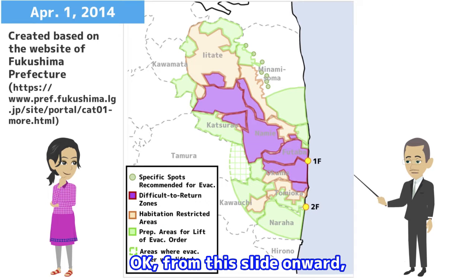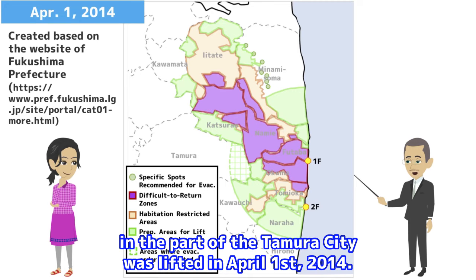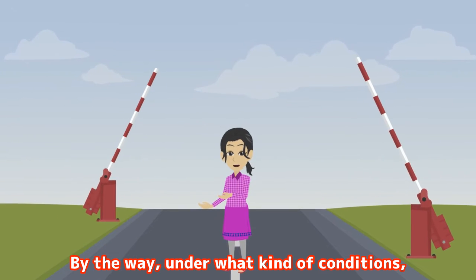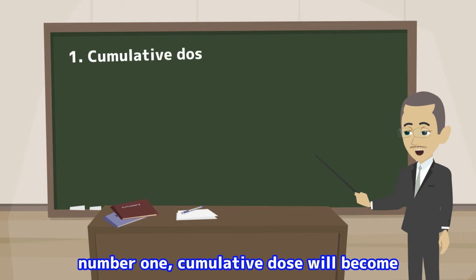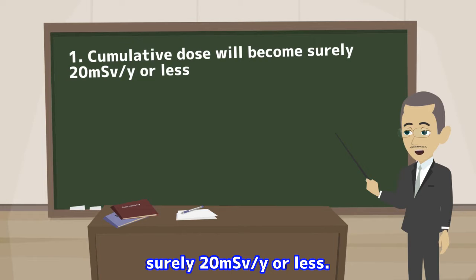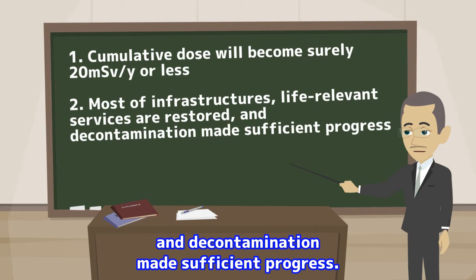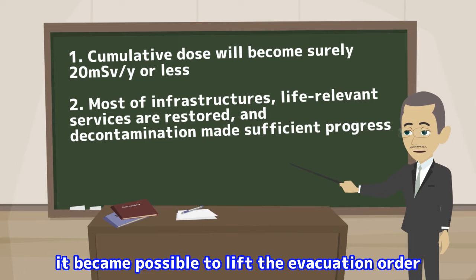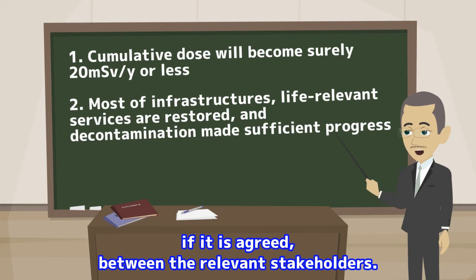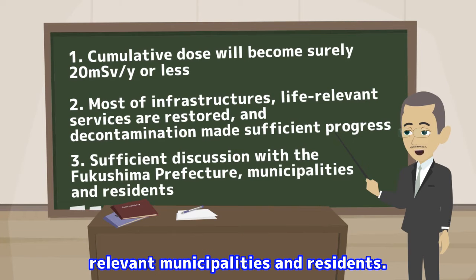From this slide onward, the evacuation orders in each municipality are sequentially lifted. First of all, the evacuation order in part of Tamura city was lifted on April 1, 2014. Under what conditions were the evacuation orders lifted? Number one, cumulative dose will become surely 20 mSv per year or less. Number two, most infrastructures and life-relevant services are restored and decontamination has made sufficient progress. With regard to decontamination, in the difficult-to-return zones, it became possible to lift the evacuation order without decontamination if agreed between the relevant stakeholders. And lastly, sufficient discussion with the Fukushima Prefecture, relevant municipalities and residents.